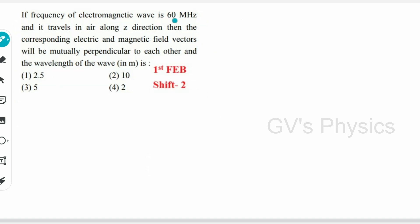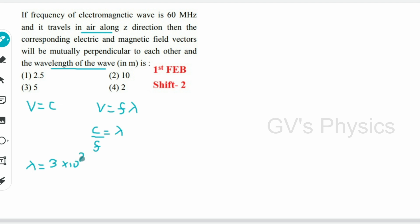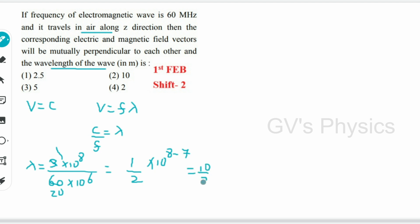Last question: the frequency of an electromagnetic wave is 60 MHz and it travels in air along the z direction. We are asked for the wavelength. Since the wave travels in air, v = c. Using v = fλ, we get λ = c/f = (3 × 10⁸) / (60 × 10⁶) = (3 × 10⁸) / (6 × 10⁷) = 5 m. Option 3 is the right answer.